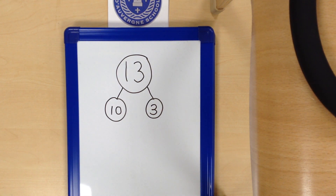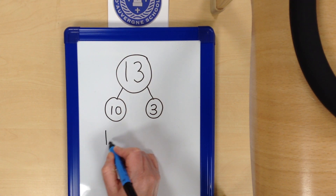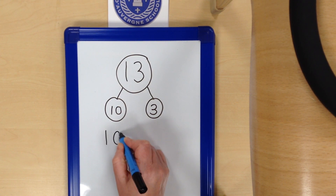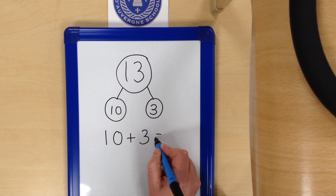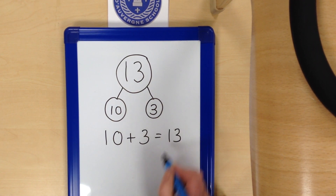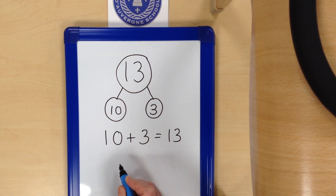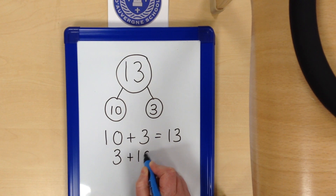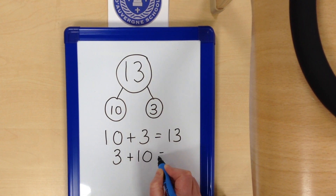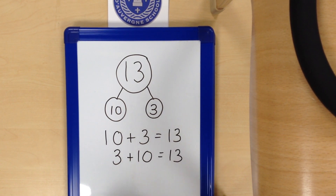We can show this as four different equations. 10 add 3 equals 13. We can also swap this around: 3 add 10 equals 13.